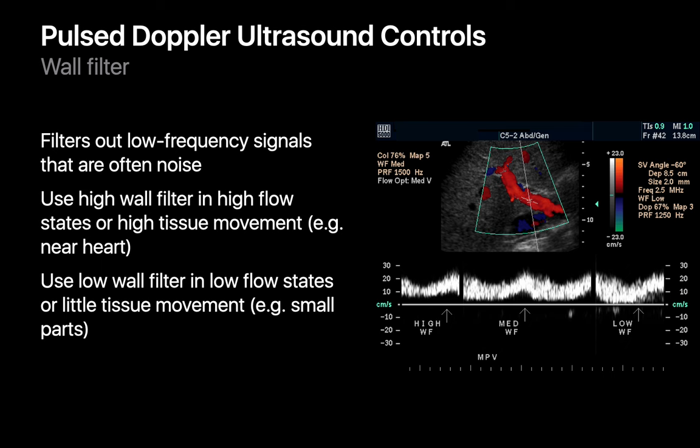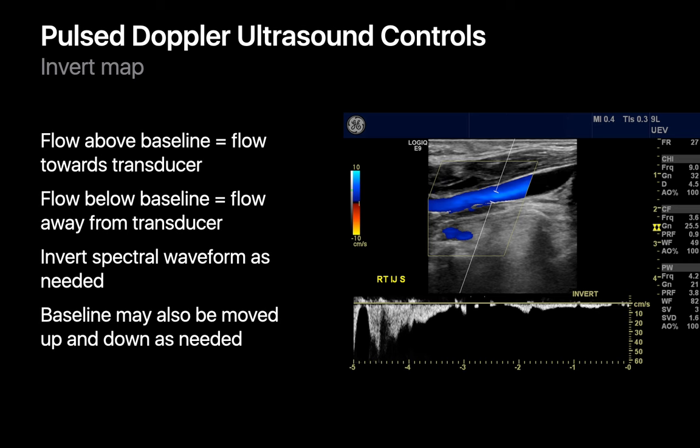The wall filter helps reduce noise in your spectral Doppler waveform caused by extraneous nearby sources of motion, such as a moving heart nearby. This noise can be reduced by filtering out high or low frequency motion corresponding to how rapidly the extraneous motion is occurring, as long as that velocity range doesn't overlap with the flow velocity you're studying. Finally, map invert assigns whether flow towards your transducer will be drawn above or below the horizontal baseline, and also permits you to move the baseline away from 0 cm/s if desired.